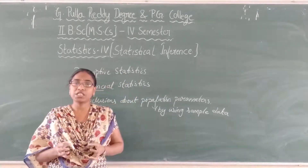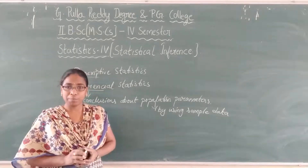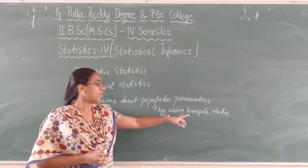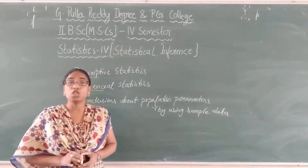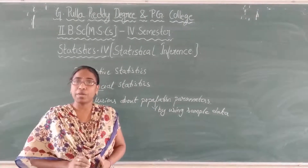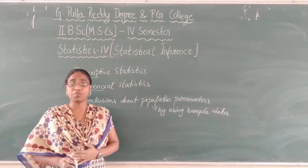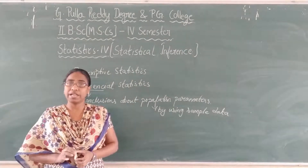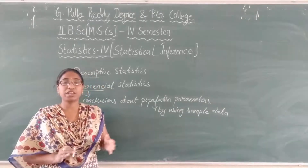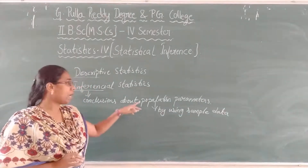In the sample, whatever units you have, all those units together are called a random sample. Based on that random sample, we are going to apply some methods and get some conclusions about the sample. Whatever conclusions we get for the sample will be applicable for the population also, because we select the sample in such a way that it should represent our population — it should resemble our population data. That is why conclusions drawn for the sample are applicable for the population.